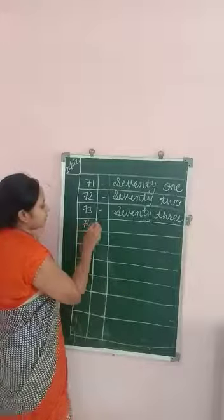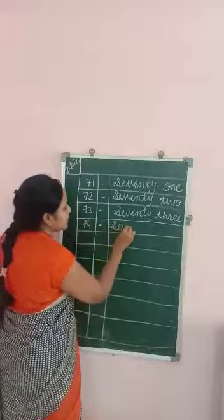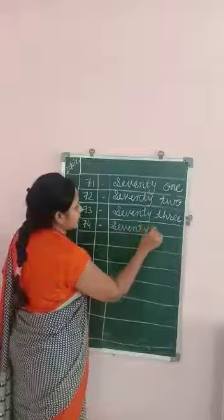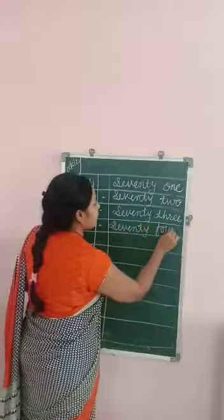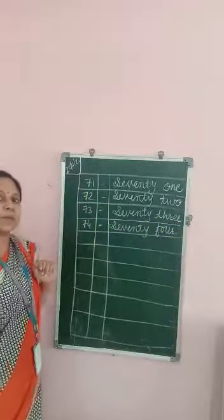7, 4 — 74. S, E, V, E, N, T, Y — 70. F, O, U, R — 4. 74.